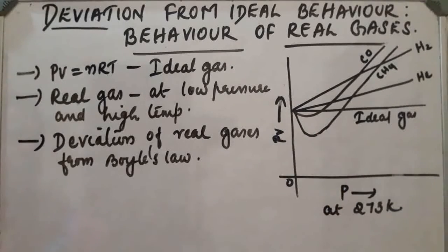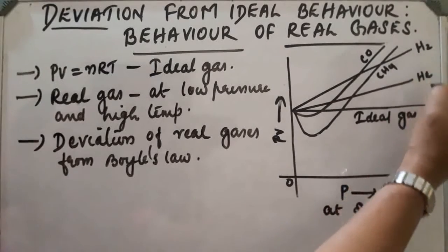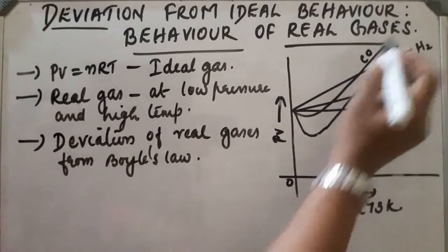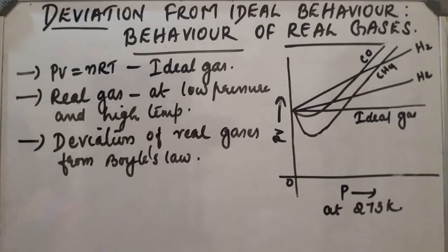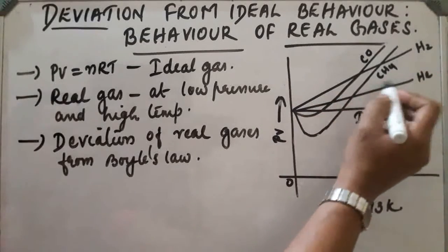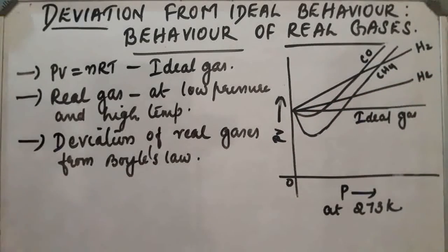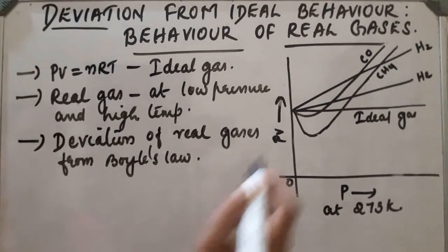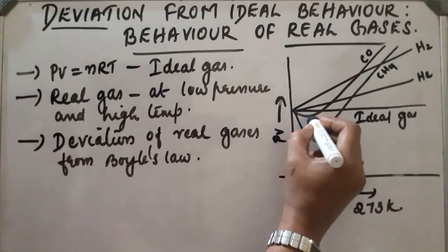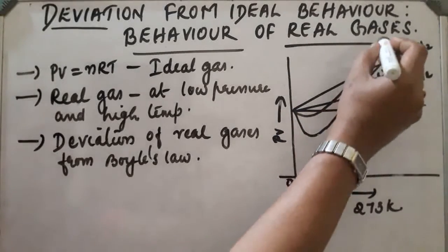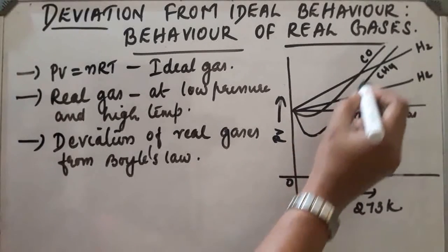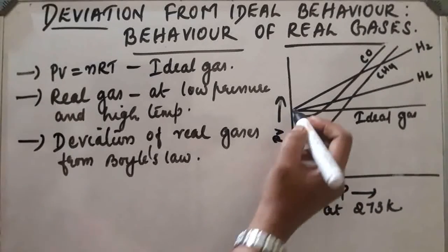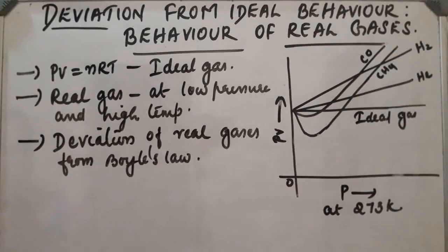In the case of hydrogen and helium, PV increases continuously as P increases, giving an upward line. But in the case of carbon monoxide and CH4, as pressure increases, PV first reaches a minimum value and then increases. For methane, this minimum value is even more pronounced. These are the different plots for different real gases.